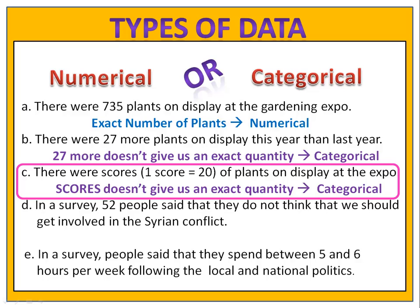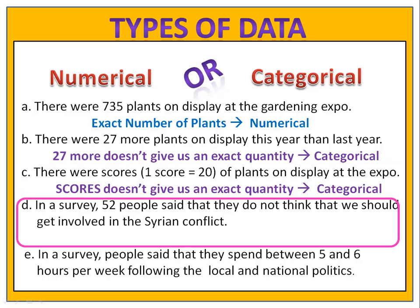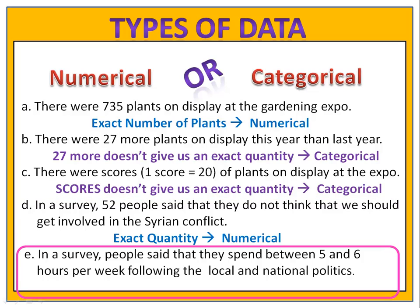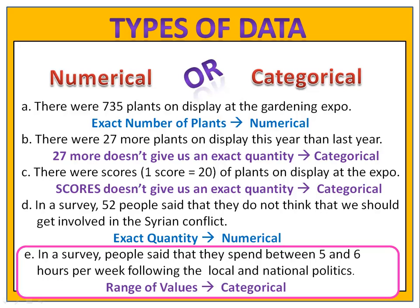It's not an exact quantity. In a survey, 52 people said they don't think we should be involved with the Syrian conflict — this is an exact quantity, so it's numerical data. Finally, in a survey, people said they spend between 5 and 6 hours per week following local and national politics. This is a range of values, so this is categorical data.